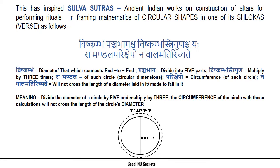This Tattwa of Samkhya inspired the Sulva Sutras — ancient Indian work on construction of altars for performing rituals — and helped in framing the mathematics of circular shapes. One shloka explains that by dividing the diameter of the circle by five and multiplying by three, the circumference calculated will not exceed the actual length of the circle.